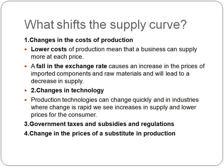What shifts the supply curve? Changes in the cost of production: lower costs means the business can supply more at each price. If your costs are falling, you're going to have more money left over to supply more things — basically lower costs, you could supply more. A fall in the exchange rate — a weaker pound means importing is dearer, so buying things is more expensive, but exporting is cheaper. Other countries like France, India, or China might want to buy your goods. That shifts supply.